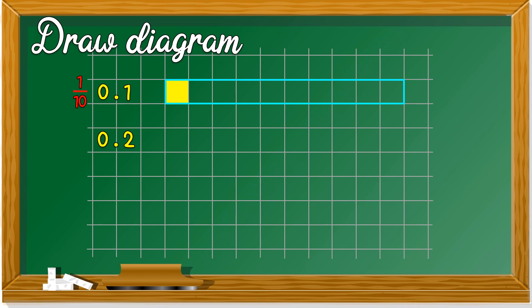0.2, what's the fraction? 2 over 10. Same thing, draw 10 parts and color 2 parts. You get 0.2.